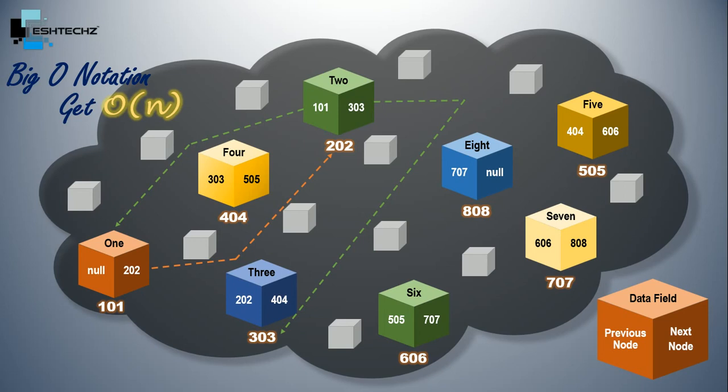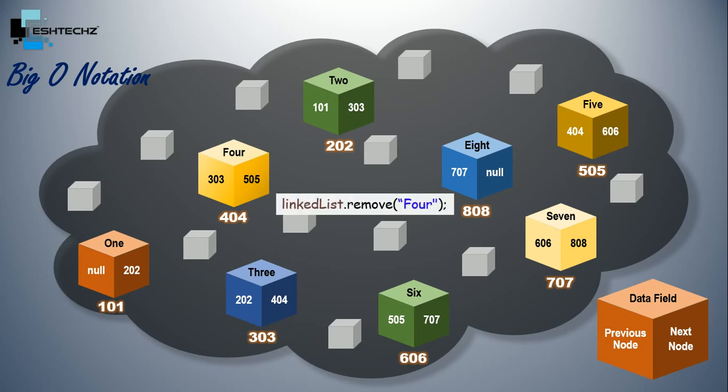Now let's understand the remove operation. So for removing, we need to write linkedList.remove. Inside remove operation, we have to provide the object. Now here we want to remove object 4. So when we execute this statement, JVM will remove the object 4 for us.